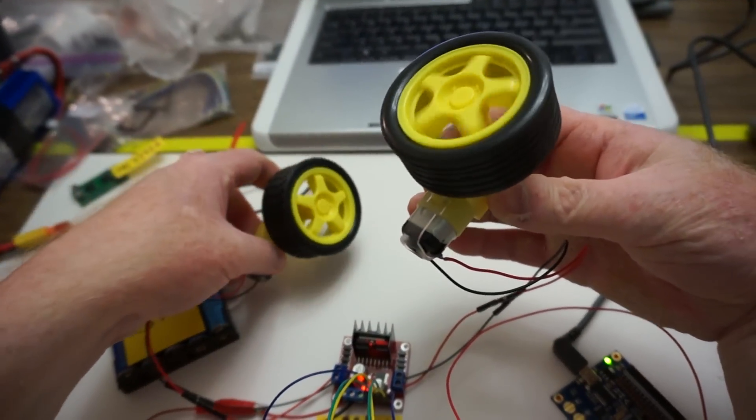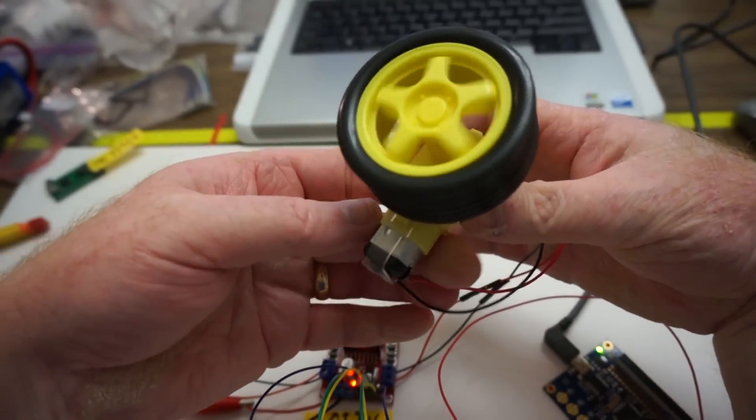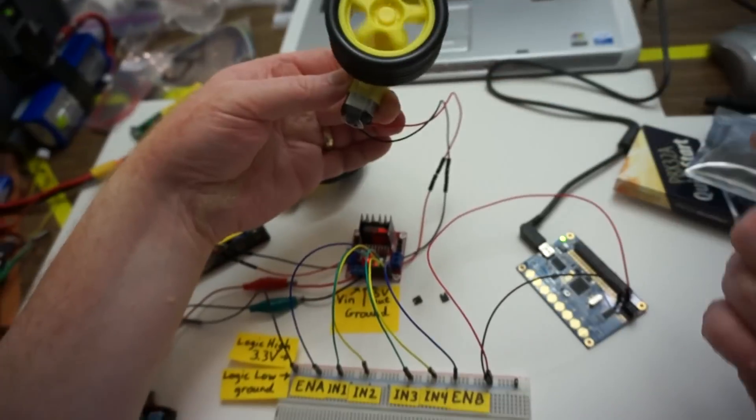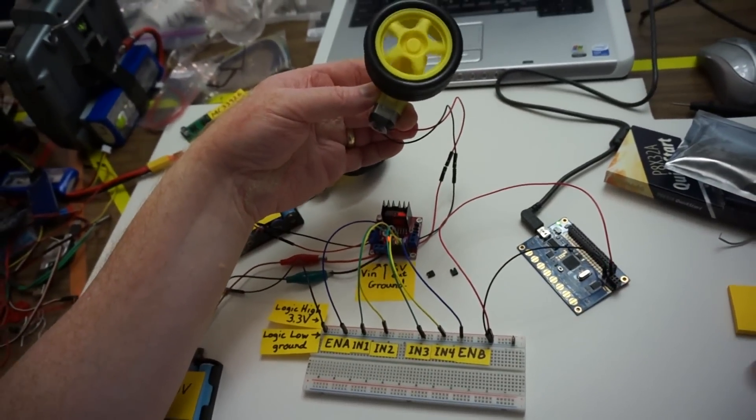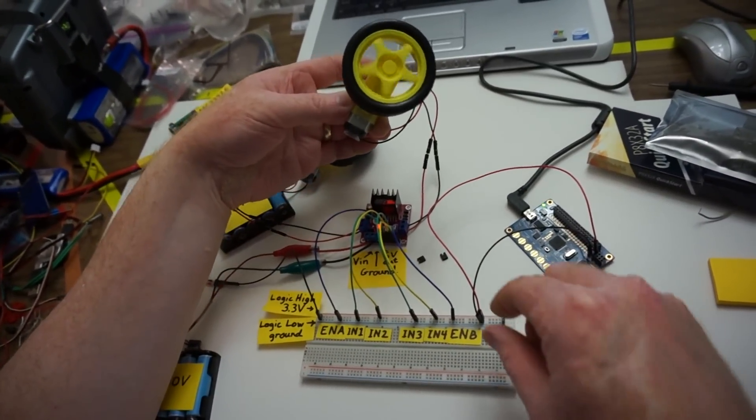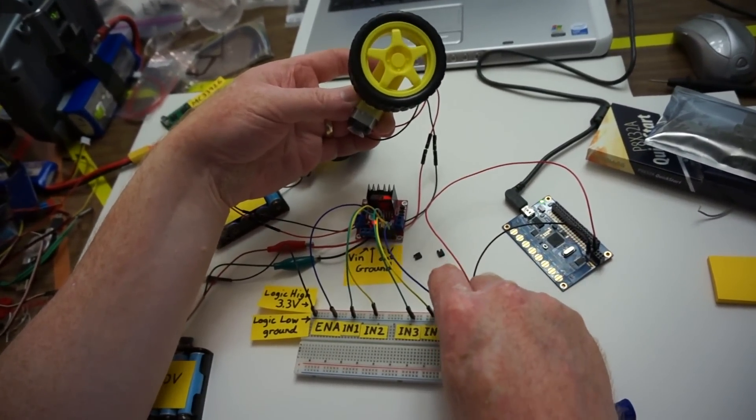So it ends up being the positive direction on the motors are switched as well, which is convenient in the robot because you want one wheel to turn the opposite direction of the other wheel. Okay, we'll turn this back low.